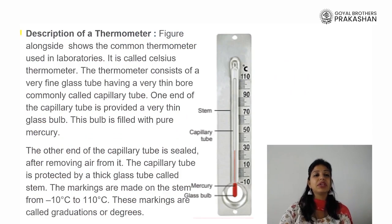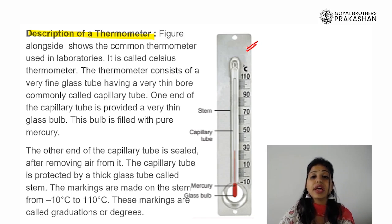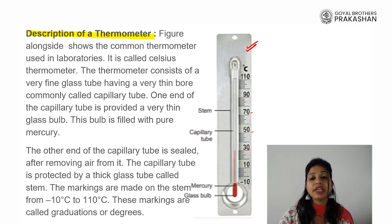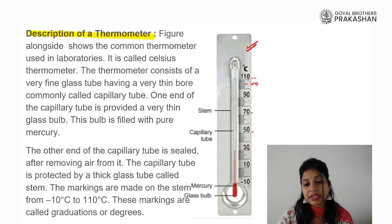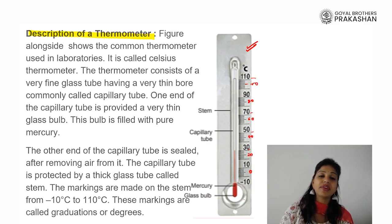If you have ever seen a thermometer, it looks like something shown in the figure here. There are markings over it: minus 10, 10, 30, 50, 70, 90, 100, and so on — with values at 0, 20, 40, 60, 80, and 100 as well. So we have different markings on the scale. Moreover, you put the bulb in your mouth below your tongue when you want to know your temperature.